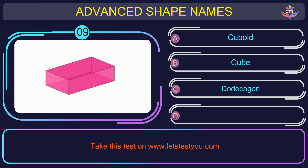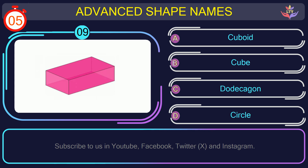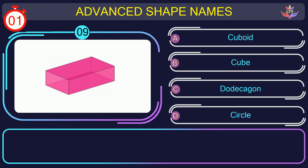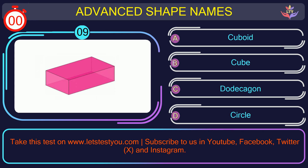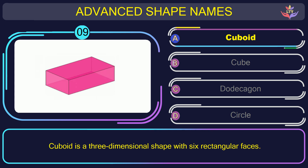Question number nine. What is the name of the shape in this picture? The correct answer is option A. Cuboid. Cuboid is a three-dimensional shape with six rectangular faces.